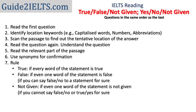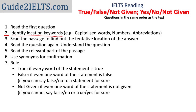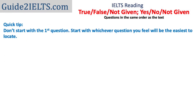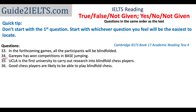The second step in solving this question type is identifying location keywords in the questions and finding the tentative location of the answer in the passage. You may want to start with the second or third question first if it would be easier to locate. For instance, in these true-false-not-given questions, questions 34 and 35 have more obvious location keywords — capitalized words, abbreviations, the word 'first' — so it may be more efficient to find the answer to question 34 first, then search for question 33, knowing it will appear before question 34 in the passage.